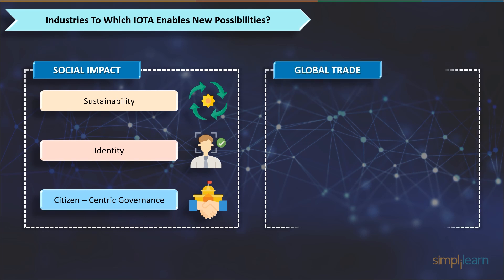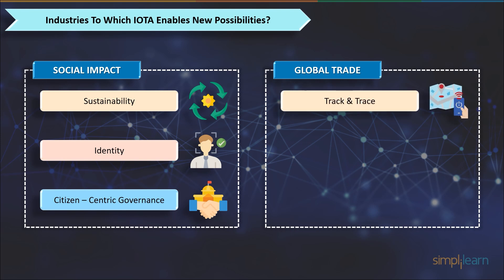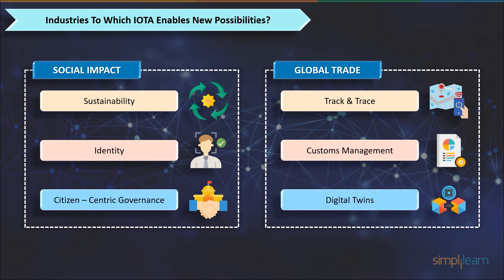Second is global trade. IOTA can make it easier for businesses, governments, logistic companies, and end users to work together while fostering trust. It focuses on track and trace — sharing updates throughout the supply chain with provenance data from the source — customs and border management, updating trade certifications for international exchange, and digital twins: turning any product, container, or consignment into a digital twin.